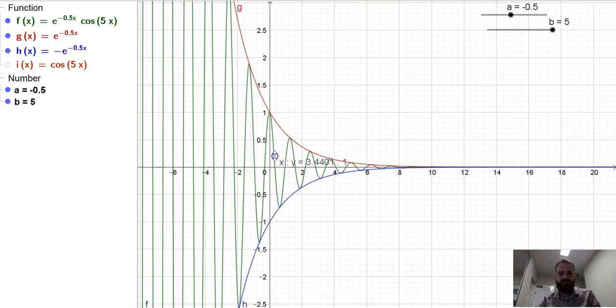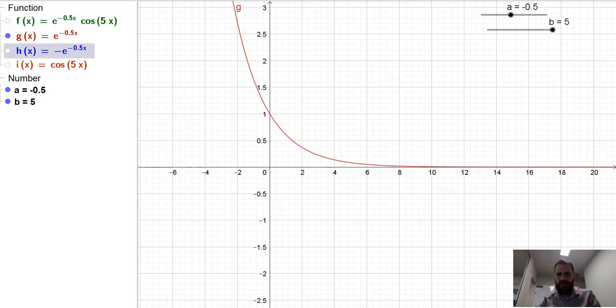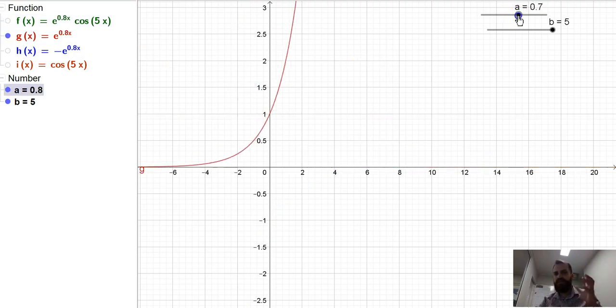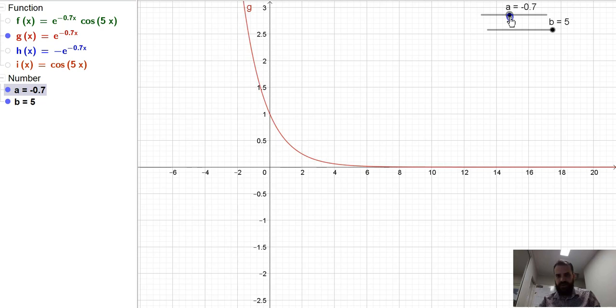The other thing to note is, watch what happens when I change the a value. It gets steeper and it gets flatter. But that value here, the x-intercept, never changes. It's always 1.